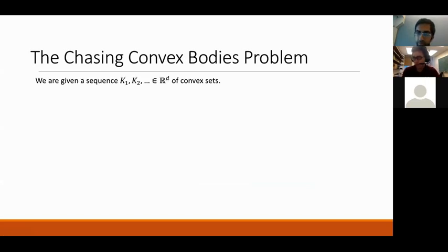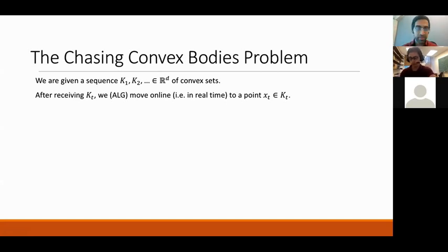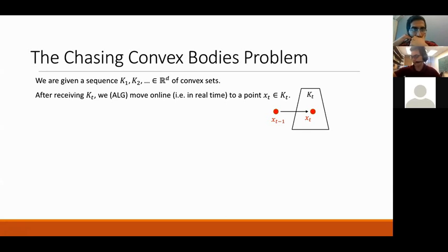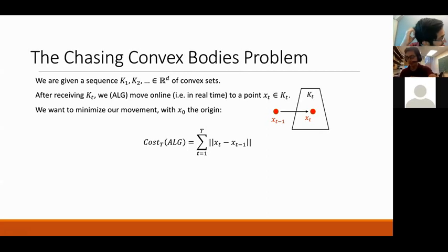In the chasing convex bodies problem, we're given a sequence K1, K2, ... of convex sets in d-dimensional space ℝ^d. We, the algorithm, move into each set right after we receive it. It's an online problem: we see K1, move our current point into K1, then see K2, move into K2, and so on. We want to minimize our total movement.